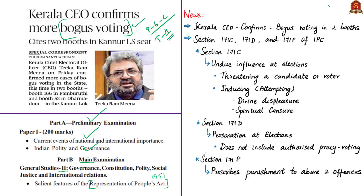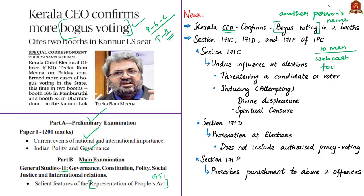The news article states that the Chief Electoral Officer in Kerala has confirmed bogus voting — voting in the name of another person or voting more than once — in two electoral booths in Kannur Lok Sabha constituency. Around 10 men have been accused of offenses such as impersonation and exerting undue influence on the election rights of others. All of them were identified using webcast footage. Criminal cases will be registered against these 10 persons under sections 171C, 171D and 171F of the Indian Penal Code for impersonation and interference with the election process.